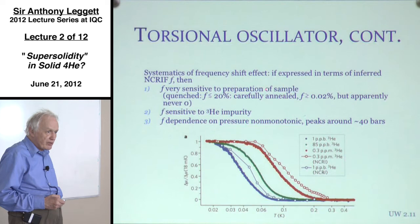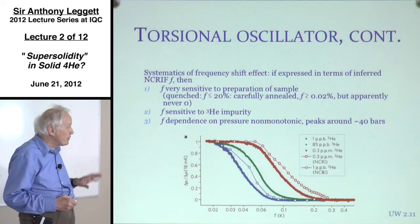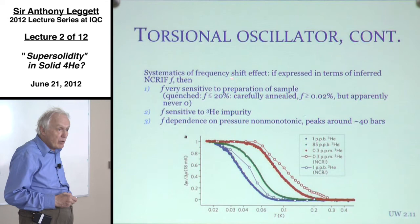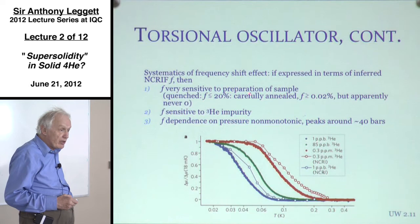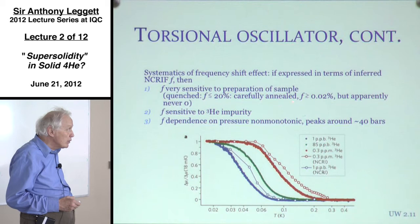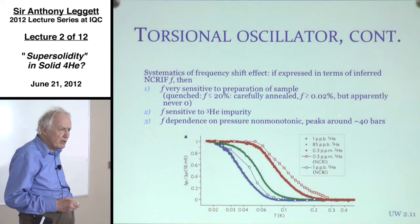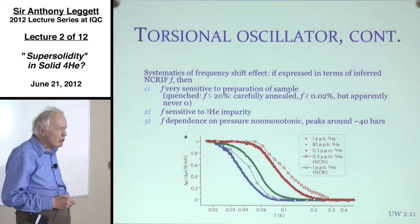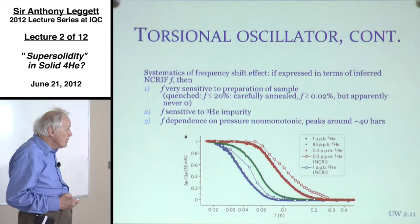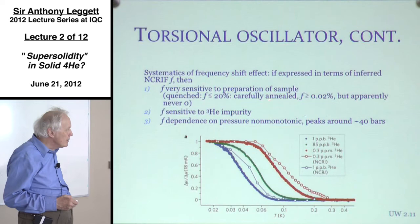The first observation is that f is very sensitive to the preparation of the sample. With quenched samples — where the liquid was pressurized very quickly — one can see values of f up to about 20%, compared to the original experiments showing about 2%. On the other hand, if you anneal the sample carefully, you can get f down to something of the order of 0.02%. Interestingly, f never seems to vanish within the error bars, even for the most carefully annealed samples.